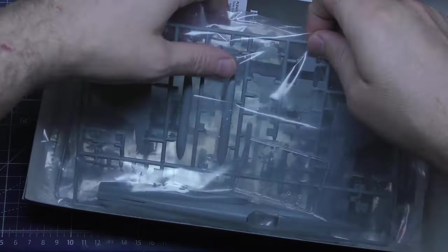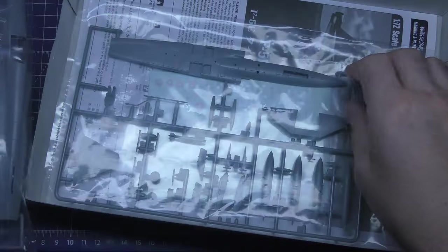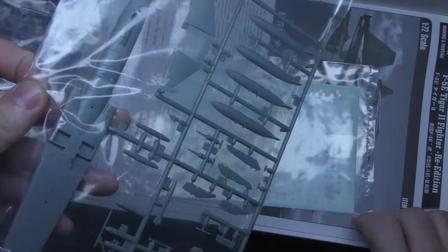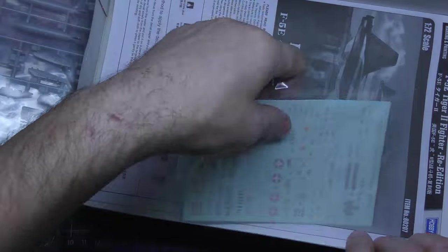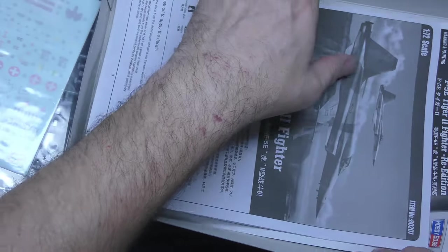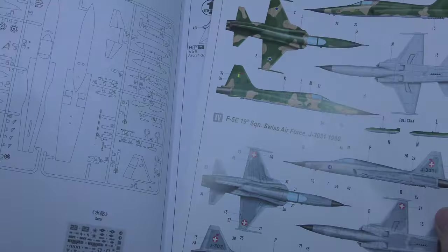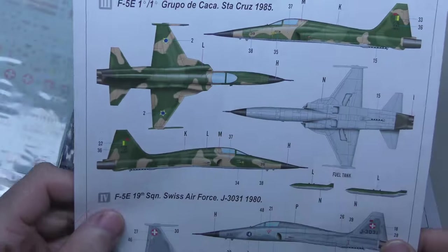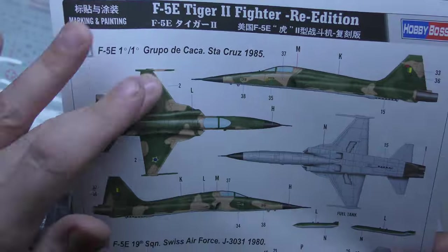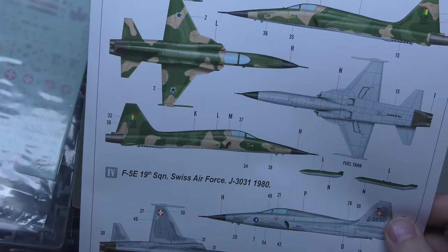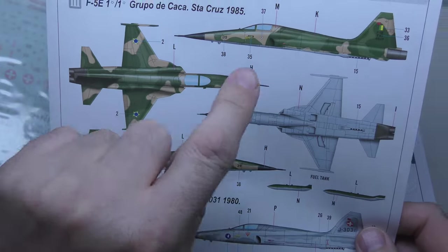Inside we've got one bag of sprues there and there's some clear parts. The second bag there, a decal sheet and an instruction manual with what is very nice—a colored camouflage detail that shows you where you're putting your decals.